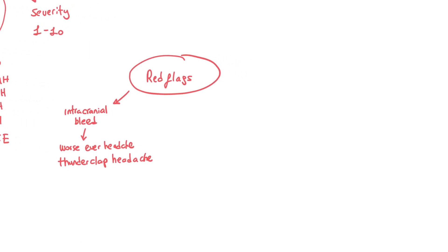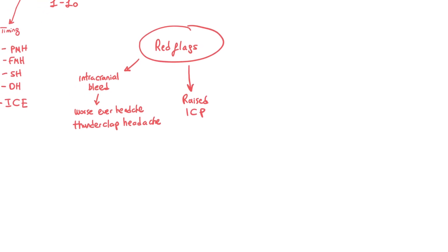The next thing to be worried about is raised intracranial pressure, or raised ICP. This is quite tricky because the patient may have non-specific symptoms, but the main things are vomiting and reduced awareness — reduced GCS, which is their Glasgow Coma Score. Some patients may also have seizures and other neurological symptoms.